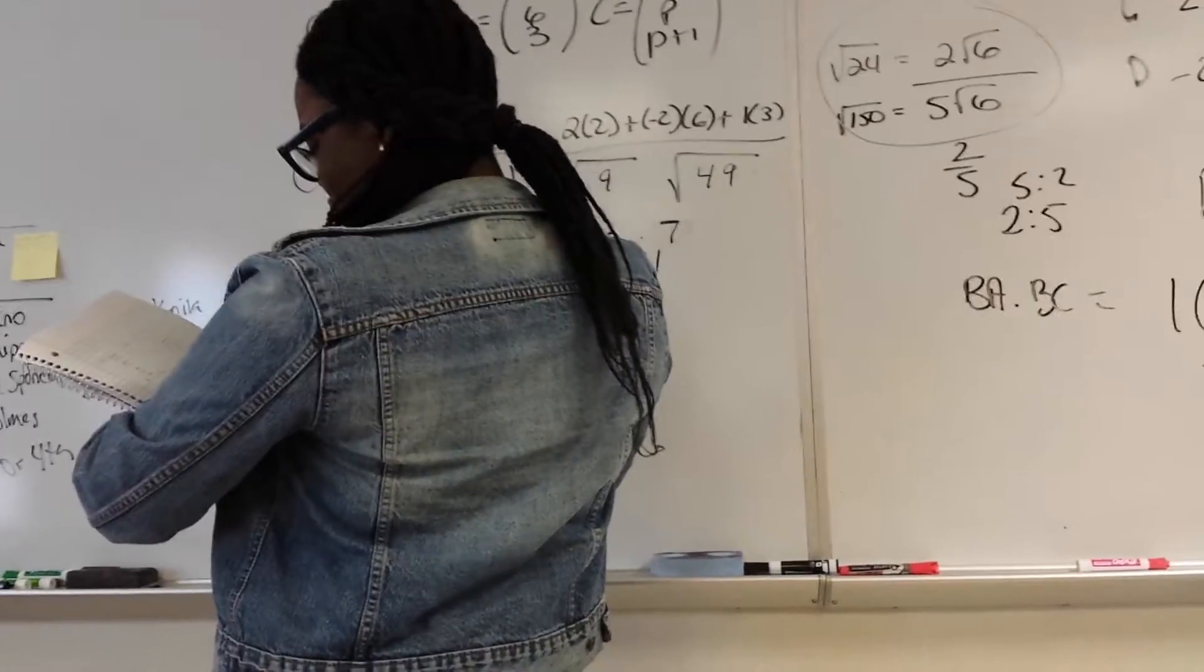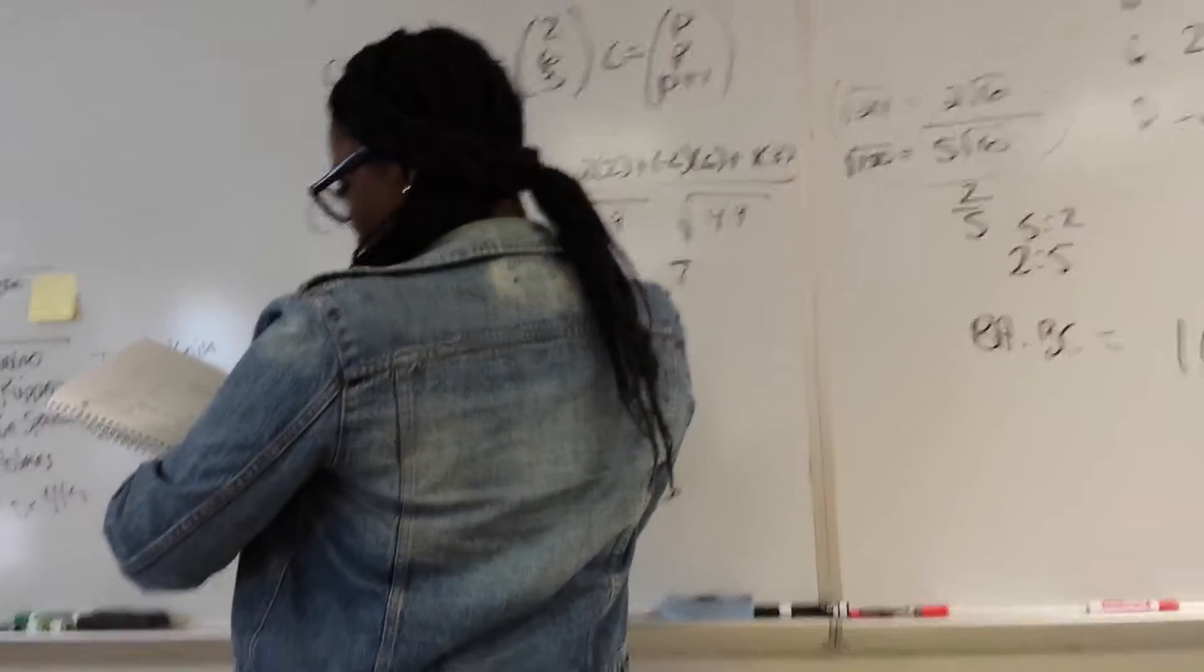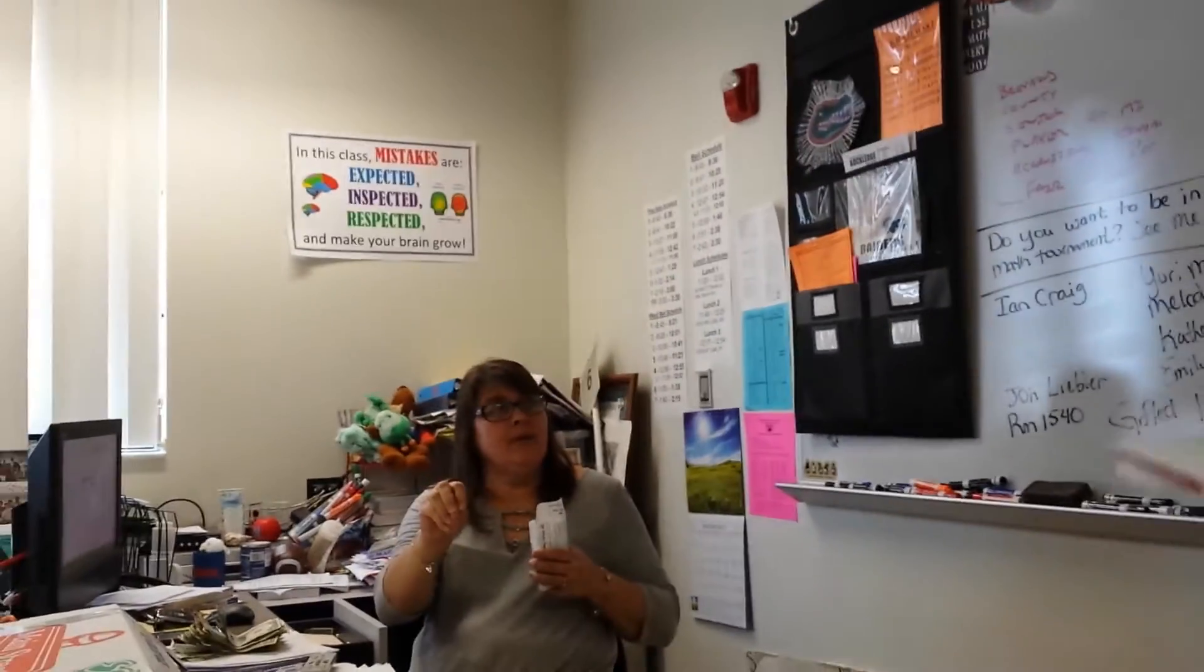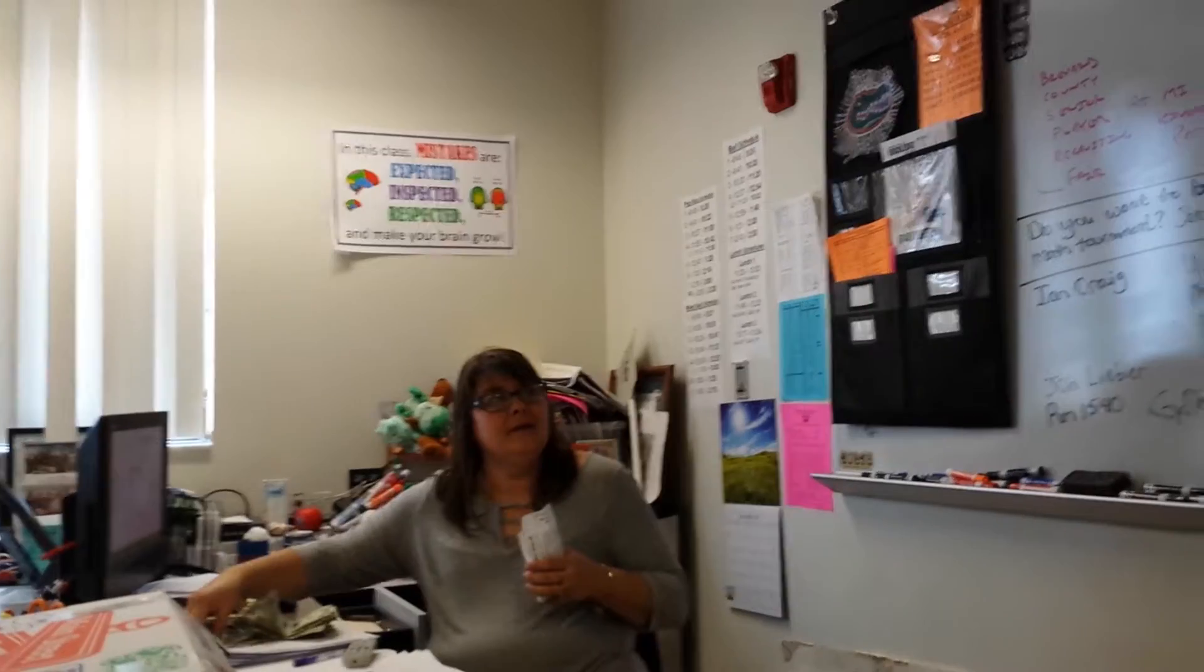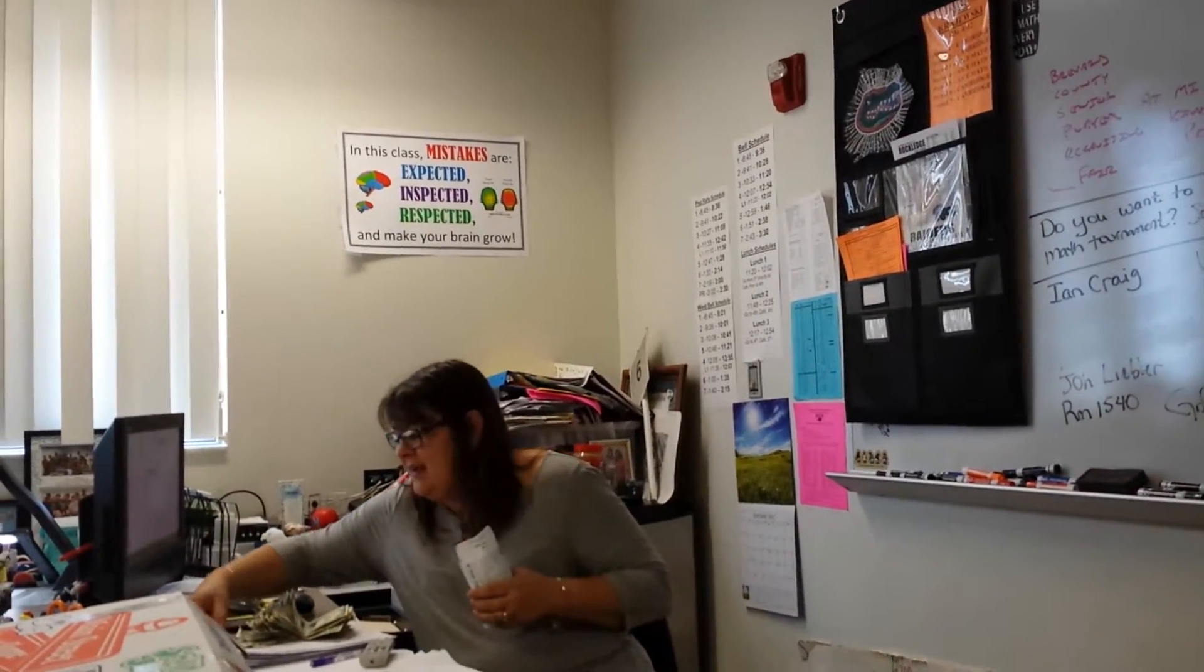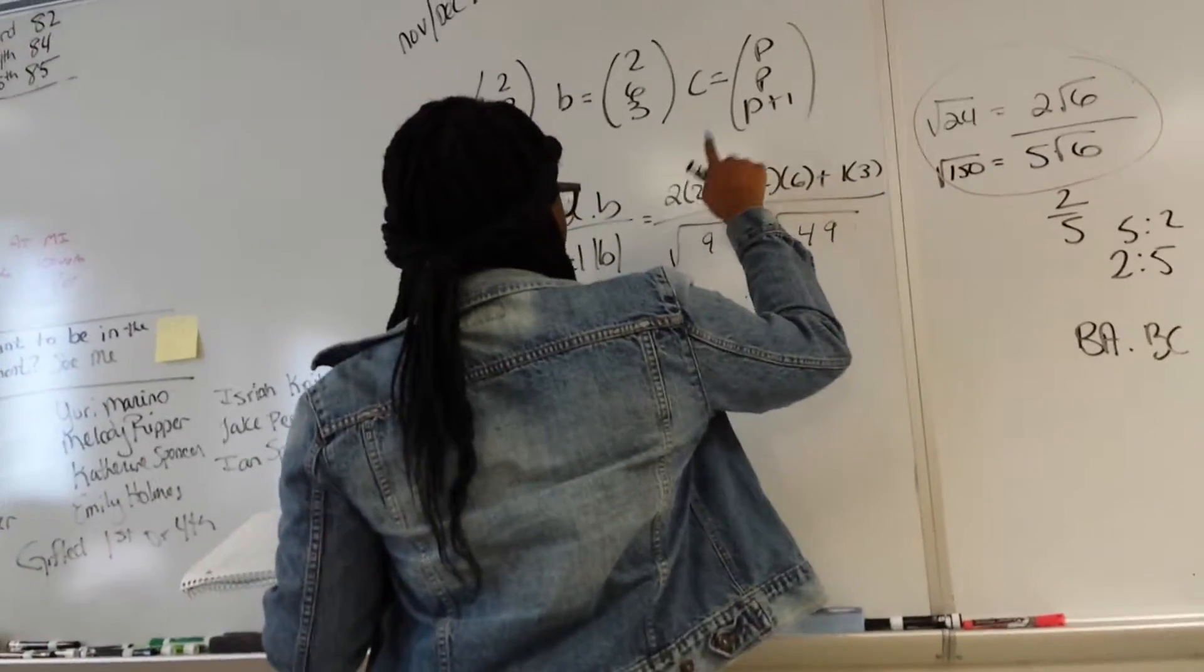So, what do you do to find the length of A times the length of B? Each of the numbers, square 2, square negative 2, square 1, add them up, and then take the square root of it. Oh, and then multiply that by B. Same. So, 2 times 6 times 3, square root of that? Right. Make sense?